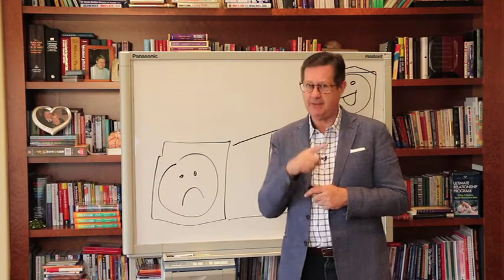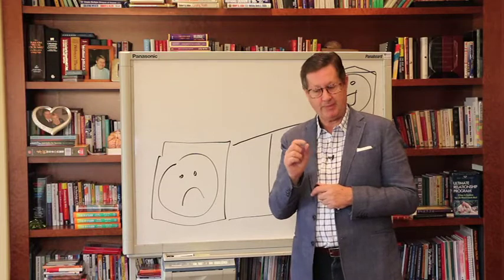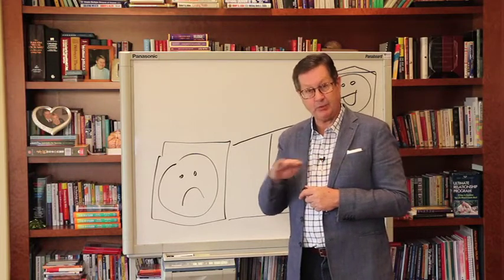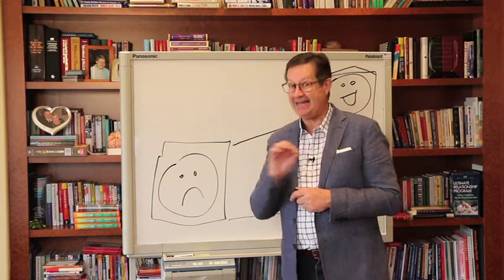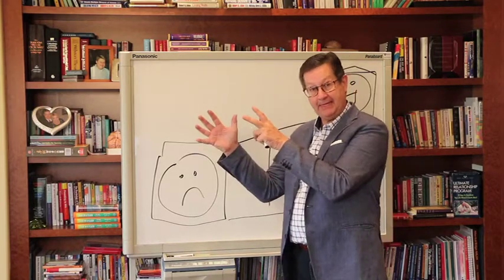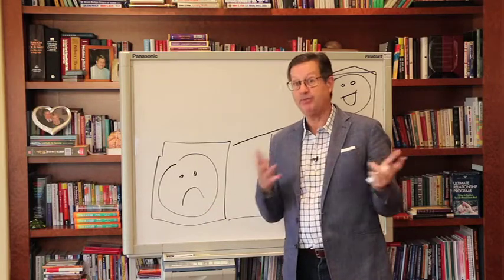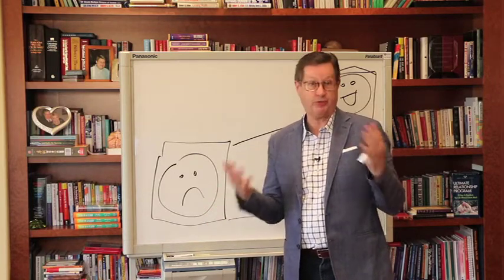Successful people do just the opposite. They all procrastinate, but the successful people look for the hard things, look for the important things, look for the high leverage activities. If done, it moves them forward rapidly, and they procrastinate the little things. They both procrastinate. They just procrastinate differently.